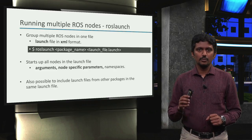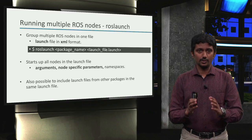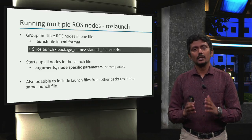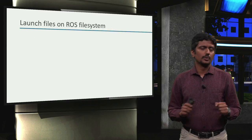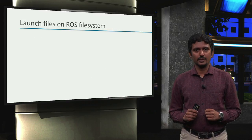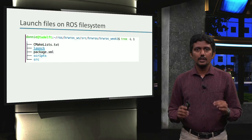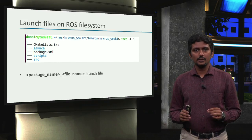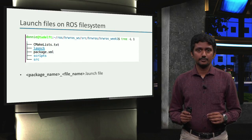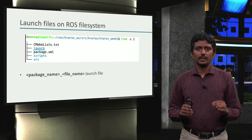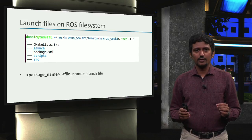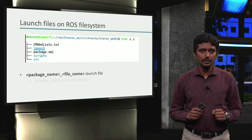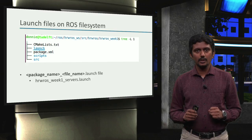It is also possible to include launch files from different packages in one launch file. In fact, we could just have a ROS package which contains only launch files and no source code at all. So where are these launch files located in the ROS file system? Launch files reside in the launch folder within a ROS package. And it is also common practice to follow a naming convention where the names start with a package name, and then a file name from which we can make some sense of what kind of nodes the launch file will start. For example: hrwros underscore week1 underscore service dot launch.